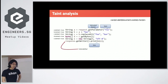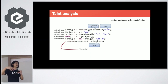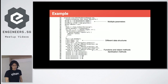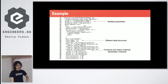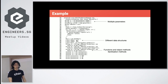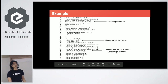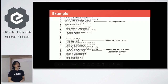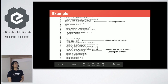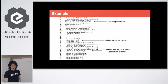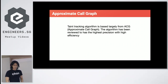There are many complications in taint analysis — it's not as simple as just tracking assignments. There might be multiple parameters in a large program, different data structures like hash maps that affect taint analysis, and many functions and objects. Most importantly for security, we care about sanitization methods: is the user's input sanitized anywhere between the source and the sink?